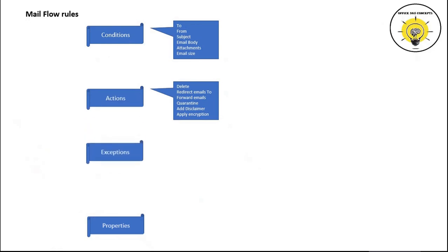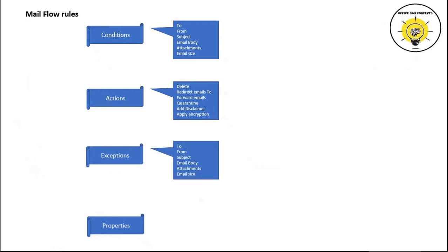Exceptions identify the emails on which actions should not be applied. We can use the same set of email identifiers which are available within conditions. We can define multiple conditions and exceptions using AND or OR operators, and depending on the requirement we can configure mail flow rules accordingly.